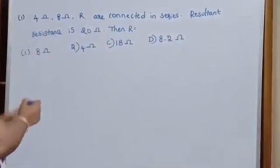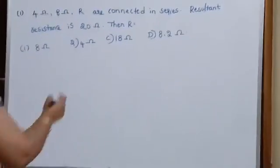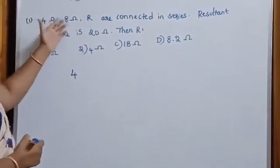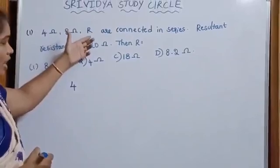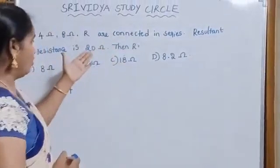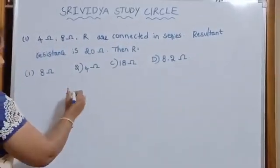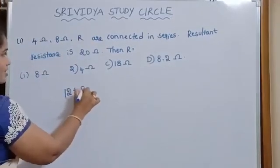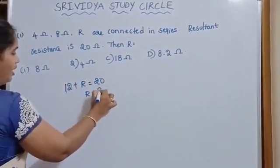Here, given 4 ohms, 8 ohms are connected in series. Then generally we are taken, in series R1 is equal to 4 ohms, R2 is equal to 8 ohms, R3 is equal to R ohms and resultant resistance is equal to 20 ohms. Then time is based. Then directly we have to consider 4 plus 8, 12 plus R is equal to 20, then R is equal to 8 ohms.